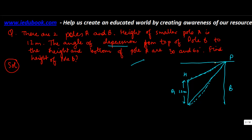The angles of depression are one smaller angle and one larger angle. The angle of depression from the top of pole B to the top of pole A is 30 degrees, and to the bottom is 60 degrees. We need to find the height of pole B, which is PB.